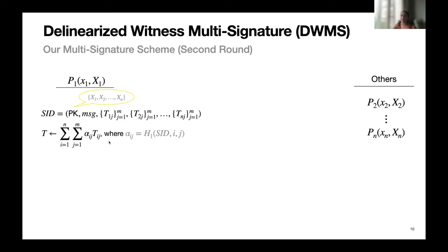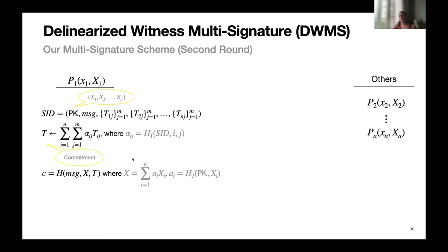We call this linear combination of witnesses with random oracle output delinearization. The reason for this name is that the coefficients of the linear combination are random and cannot be known by the adversary before it selects its own randomness. This reduces adaptive random selection by the adversary. After commitment generation, as in the Schnorr scheme, they compute C = hash(message, aggregated public key, commitment). Each party then generates an individual partial signature, which consists of the delinearized witnesses plus the secret key multiplied by C.